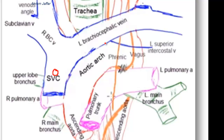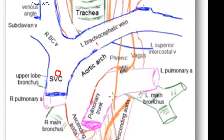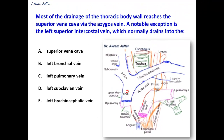The right superior intercostal vein drains into the azygous arch, but the left superior intercostal vein, as you can see here, drains into the left brachiocephalic vein.